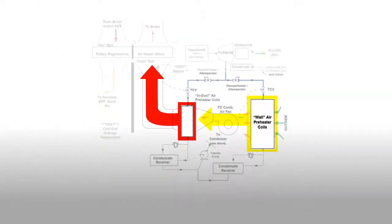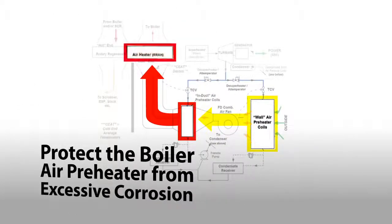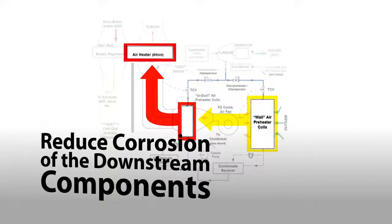Armstrong's steam and liquid air heater systems protect the boiler air preheater from excessive corrosion and fouling by controlling the cold end average temperature. This also reduces corrosion of the downstream components by maintaining the flue gas temperature above the acidic dew point at all times.